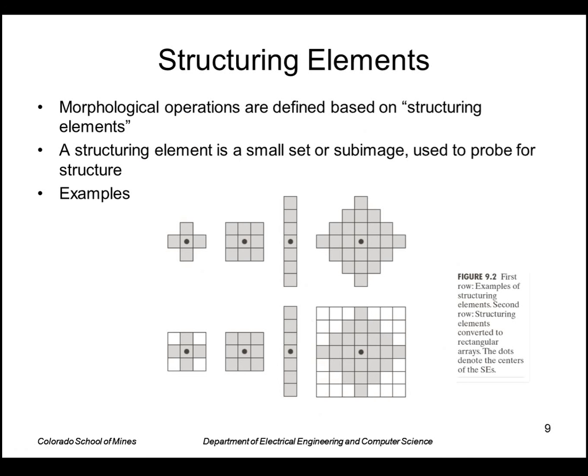So in morphological image processing, we often use structuring elements. A structuring element is just another set or sub-image that we use to probe for structure. These are examples of structuring elements—they're usually small like this. Implementation-wise, we would store these in a rectangular array where the gray areas indicate ones, and the white areas would be elements where there's zeros. We also need to define for each structuring element what its center is. So the black dot here denotes the center.